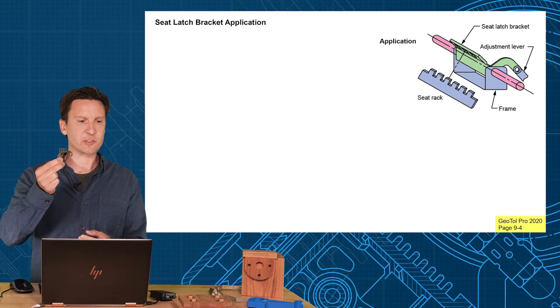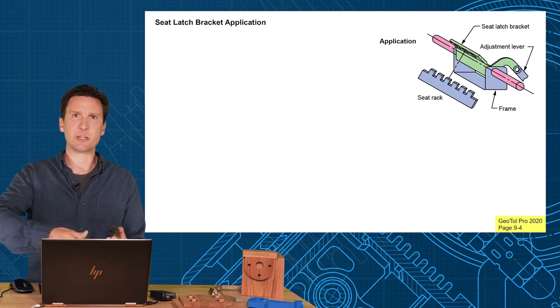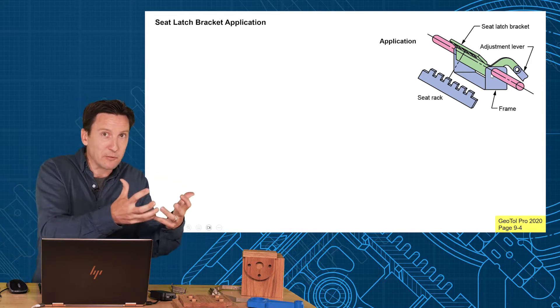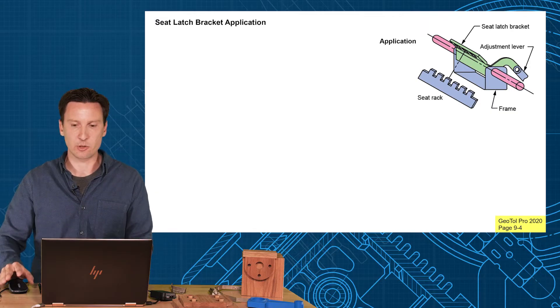Let's look at another application here. This is an automotive example, a little seat latch bracket. This is found on the underside of your driver's seat of your car. You pull up the lever, you can adjust the seat forward, drop the lever, and it re-racks itself in a new place. Here's the picture of the assembly. This is so important—how does it fit? How does it mount in the assembly is everything. So you always have to know the assembly location before you can pick these datum features. It fits into the main frame right here into a little slot.